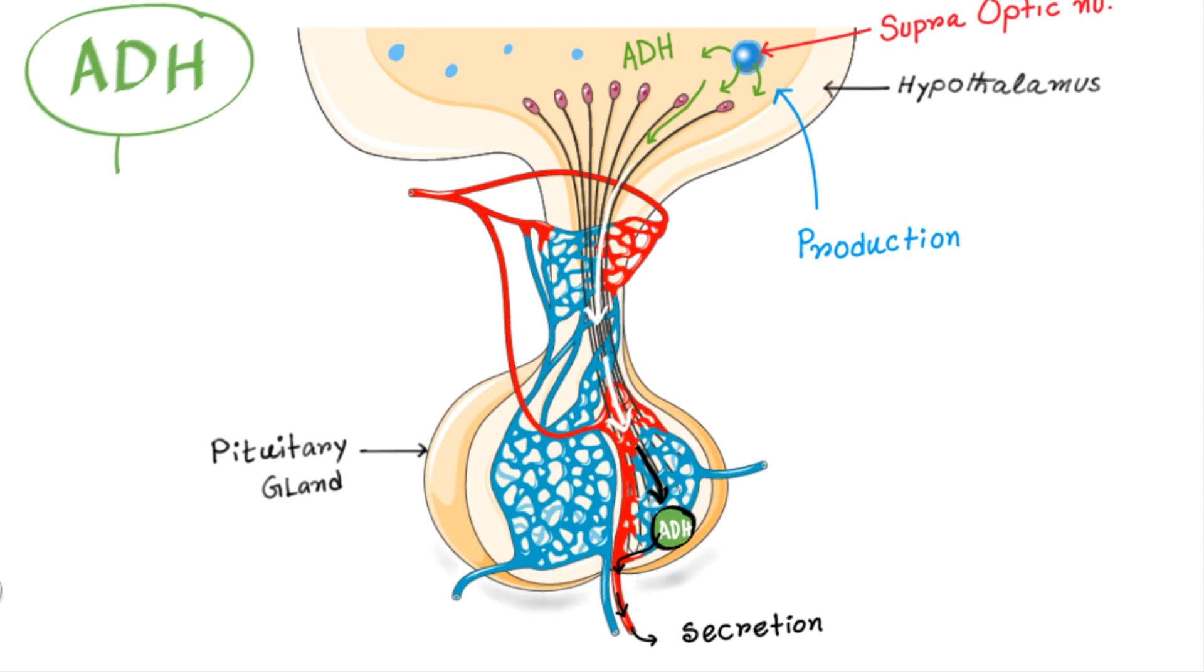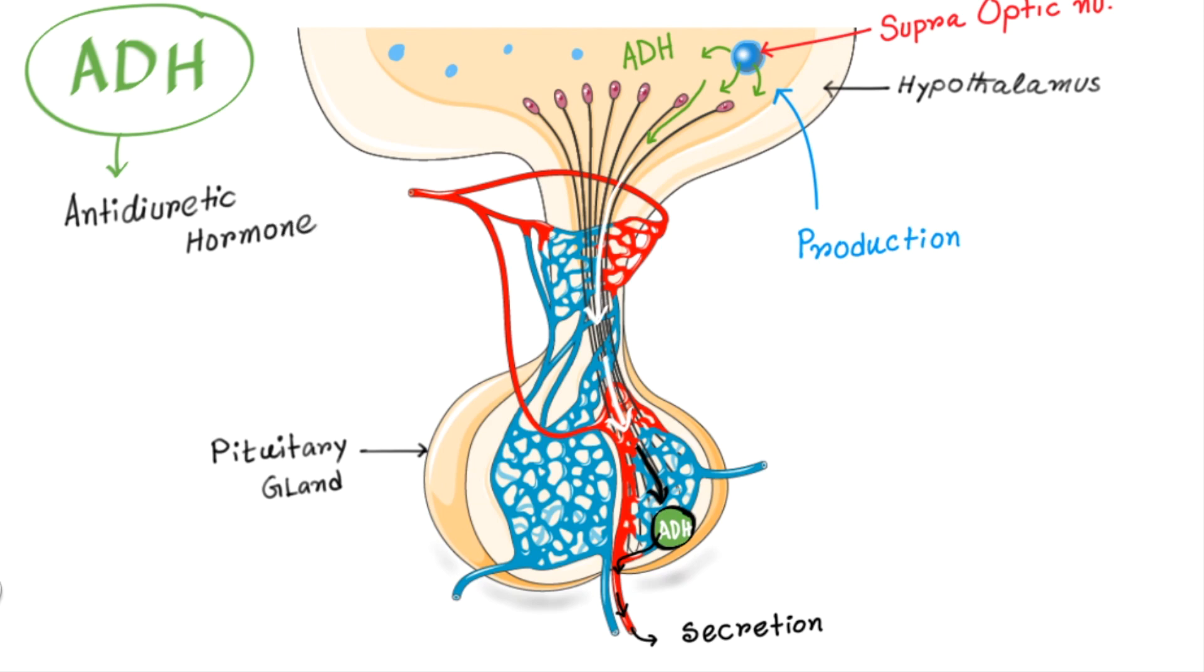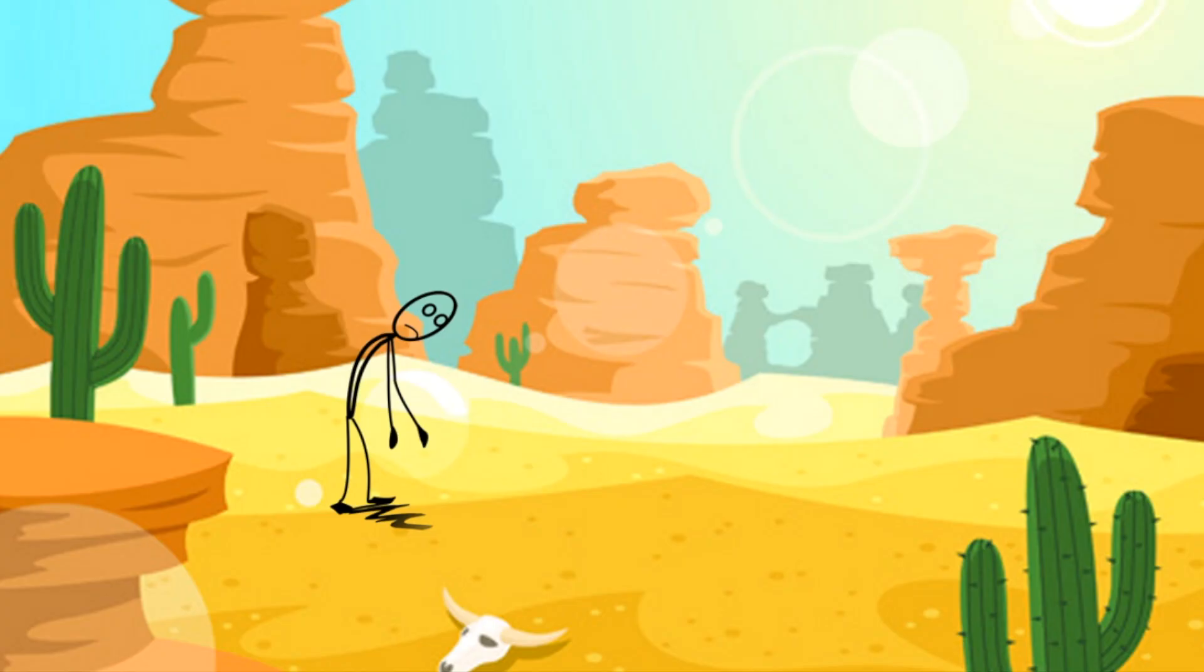Now ADH is antidiuretic hormone which means it doesn't allow diuresis or water loss. So it is water conserving hormone. Now what circumstances you need to conserve water? Well when your blood or extracellular water is hyperosmolar.